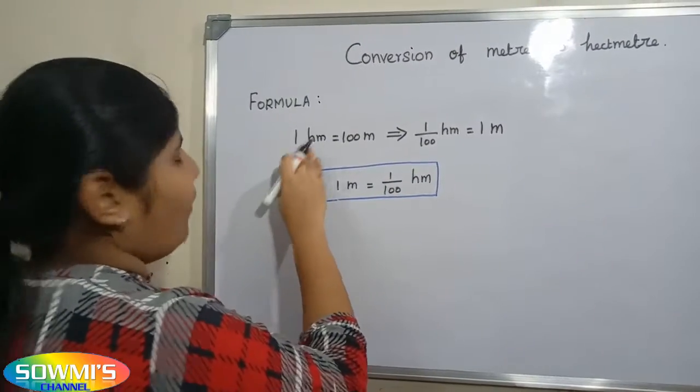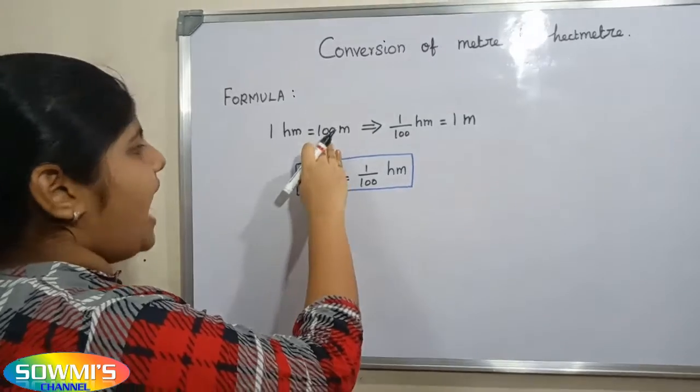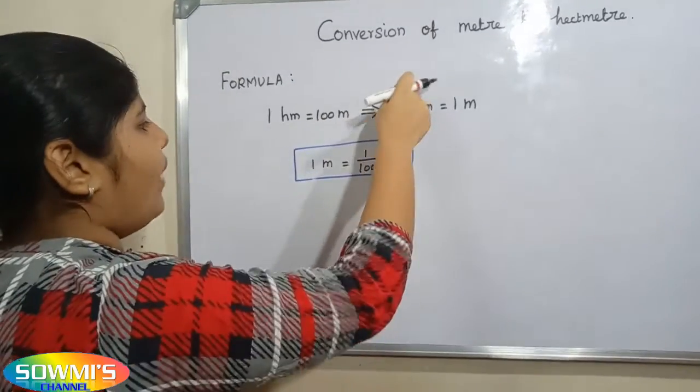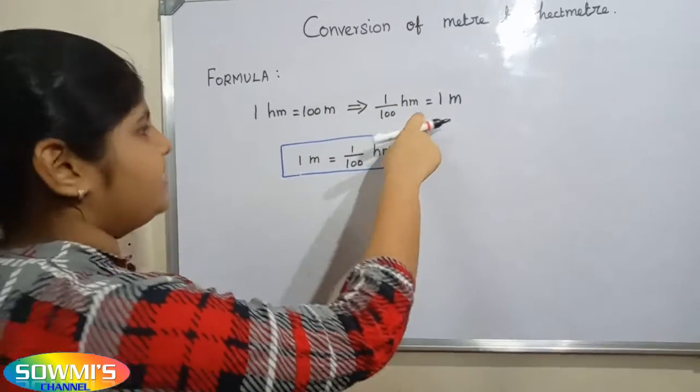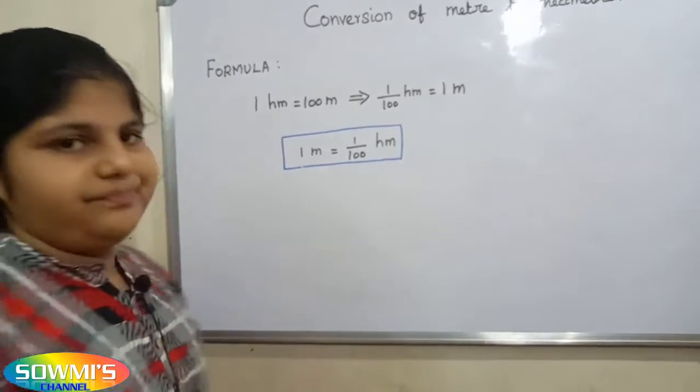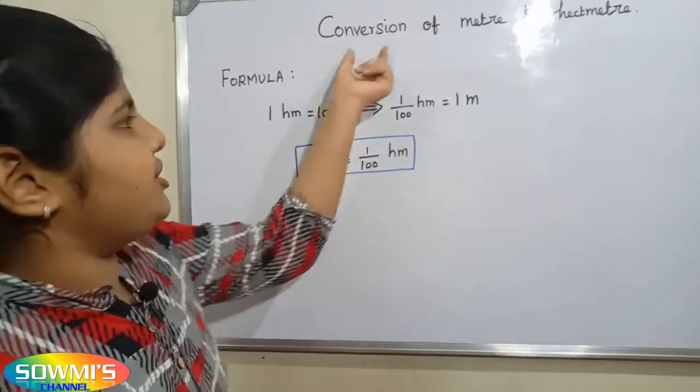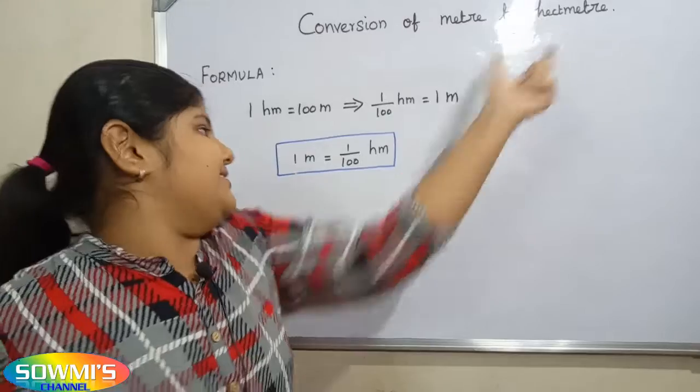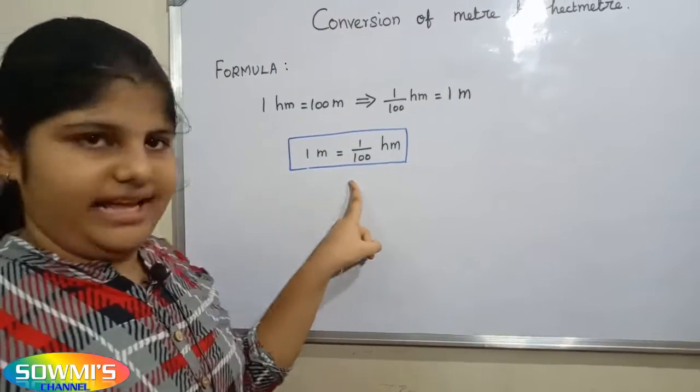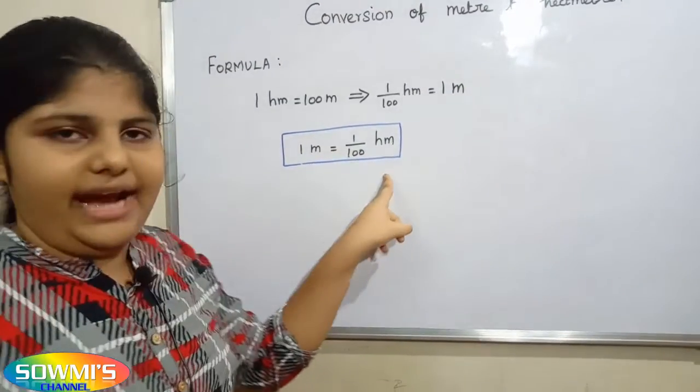You already know that 1 hectometer is equal to 100 meters. So 1/100 hectometer is equal to 1 meter. The formula for conversion of meters into hectometers is 1 meter equals 1/100 hectometer.